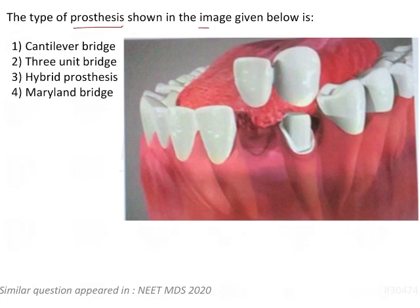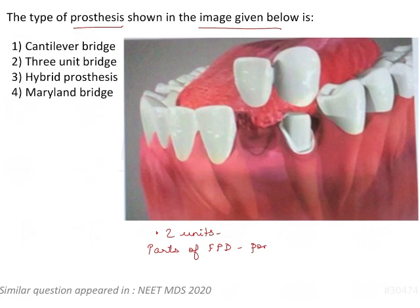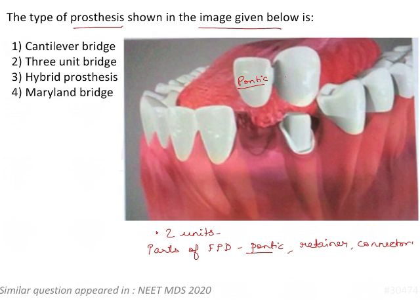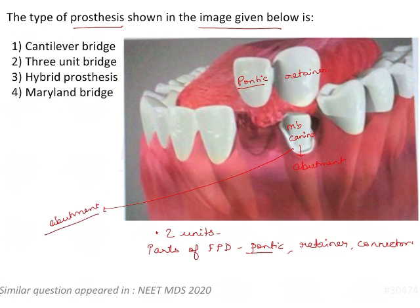The type of prosthesis shown in the image given below — here we have two units. Let's revise quickly the parts of FPD: pontic, retainer, connector. The abutment is not a part of the FPD; the abutment is the tooth. In the given unit, there is one pontic — the tooth to be replaced in form, function, shape, size, and aesthetics. This is the retainer going on the mandibular canine, which is the abutment. So it's a two-unit bridge.